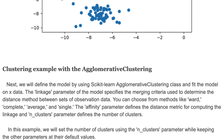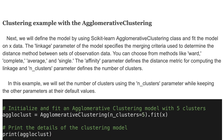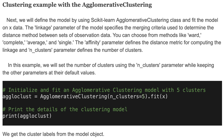Next we define the model using the scikit-learn AgglomerativeClustering class and fit the model on the X data. The linkage parameter specifies the measuring criteria used to determine the distance between sets of observations. You can choose from methods like ward, complete, average, and single. The affinity parameter defines the distance metric for computing the linkage, and the n_clusters parameter defines the number of clusters. We initialize and fit the agglomerative clustering model with five clusters.